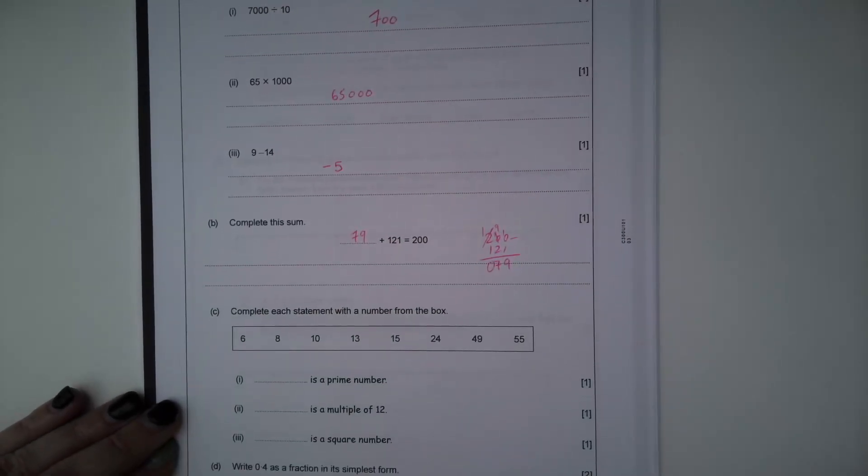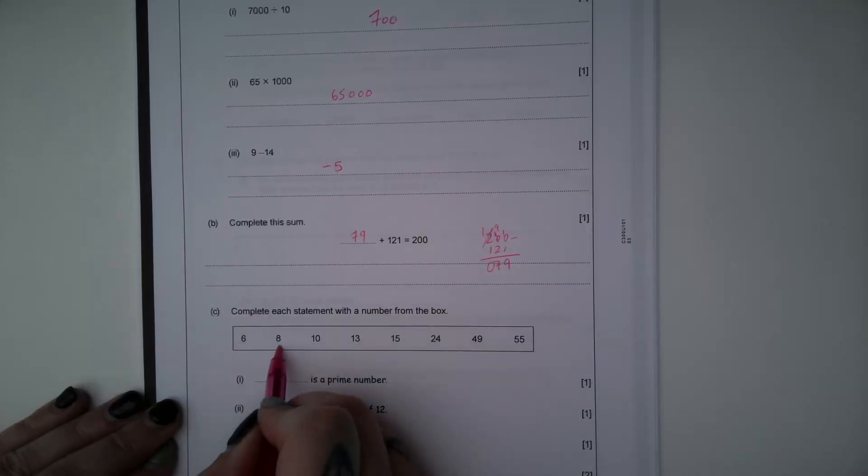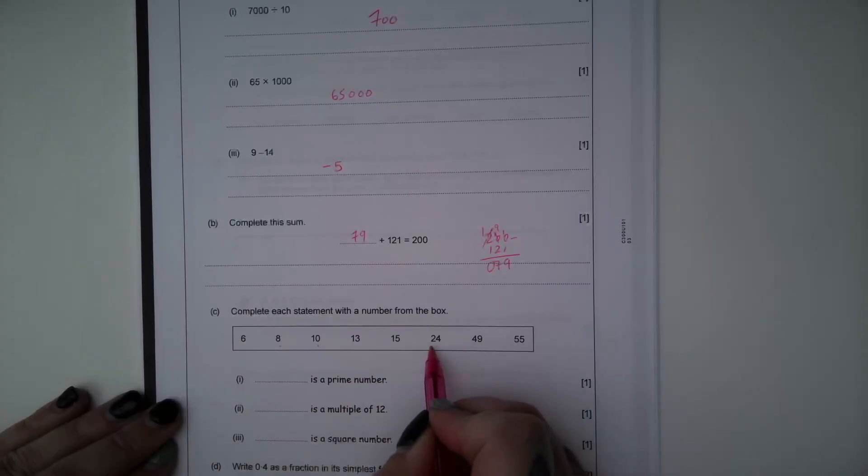Part C, complete each statement with a number from the box. So we need to use the numbers in this box here. Part 1, this number is a prime number. So a prime number can only be divided by one and itself because it only has two factors, one and itself. So any of these that are multiples of 2, so 6, 8, 10, 24, cannot be prime numbers.